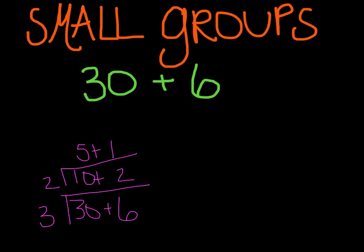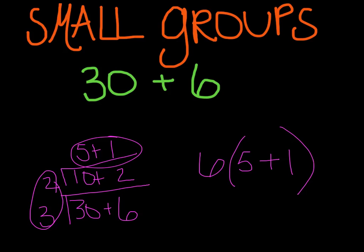Now 5 and 1 don't have any common factors, so I know that I'm done. So I multiply this stuff. 3 times 2 is 6. And then this stuff goes in the parentheses, so 5 plus 1. And I can quickly check it. 6 times 5, 6 times 5 does equal 30, and 6 times 1 does equal 6.